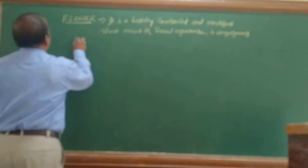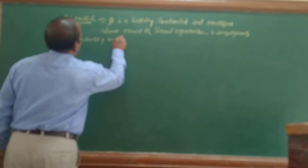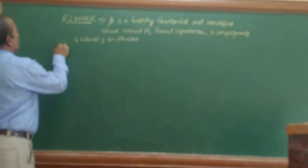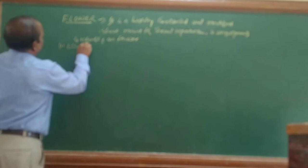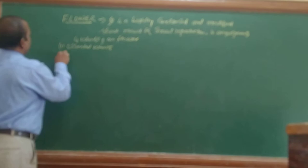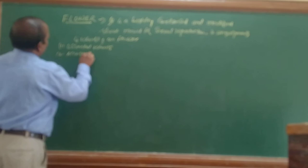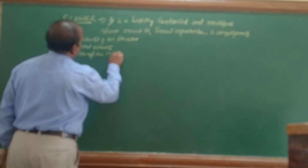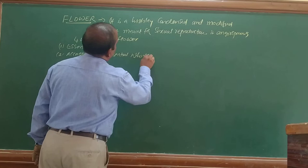Any flower you take, it may have four important whorls. The four whorls of a flower consist of essential whorls and accessory or non-essential whorls.